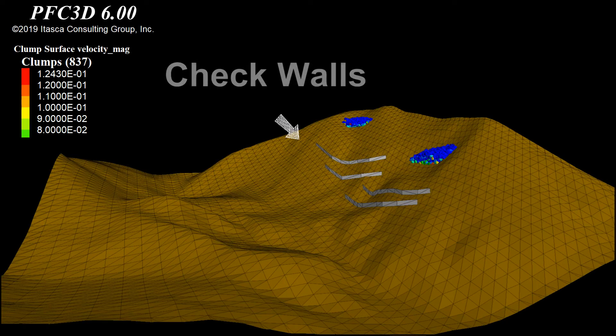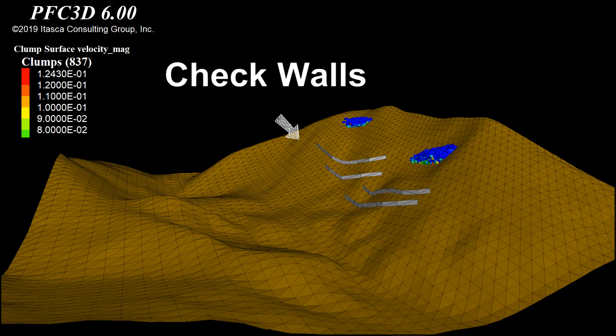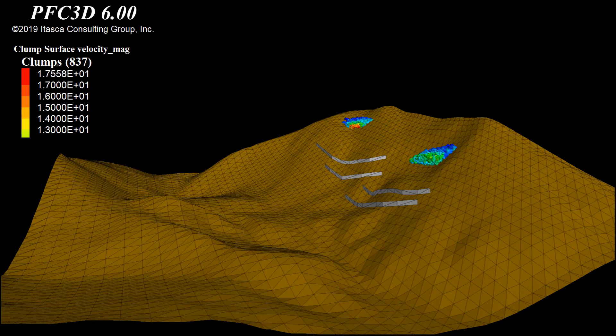One such remedial measure is building check walls and retaining walls. In this simulation we will build four walls in the path of landslides so that the impact and the distance covered by those landslides can be reduced, and we will see how effective they are.